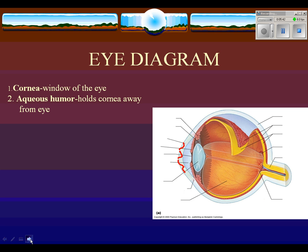Between the cornea and the rest of the eye is the aqueous humor. It's a fluid — a liquid — that helps maintain the space between the cornea and the lens. This is also the cause of one of the leading causes of blindness, called glaucoma.